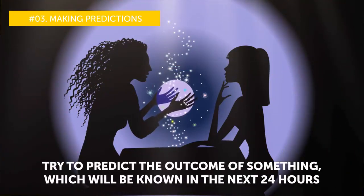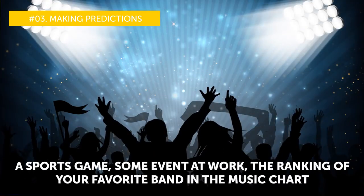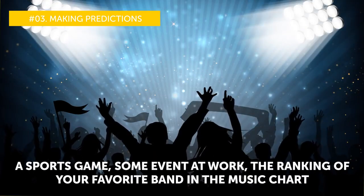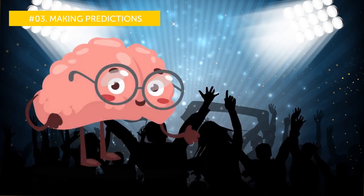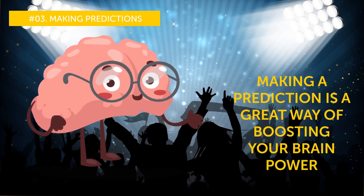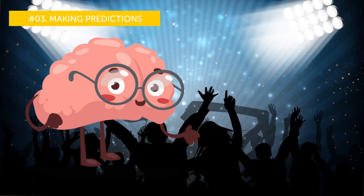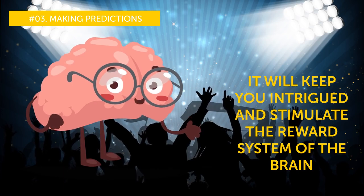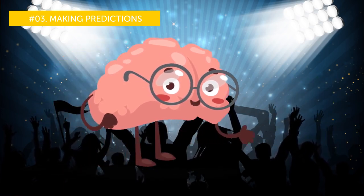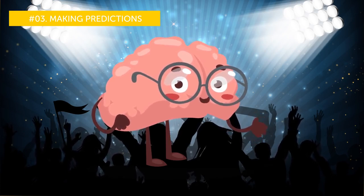Number three, making predictions. Try to predict the outcome of something which will be known in the next 24 hours. A sports game, some event at work, the ranking of your favorite band in the music chart. It can be whatever, then wait to find out the results. What's the point of it? Making a prediction is a great way of boosting your brain power. First, it takes some imagination to do it. Second, it will keep you intrigued and stimulate the reward system of the brain. According to neuroscientist Judy Willis, MD, if you were right you would be happy. If you were wrong you will make your conclusions and might learn something new.